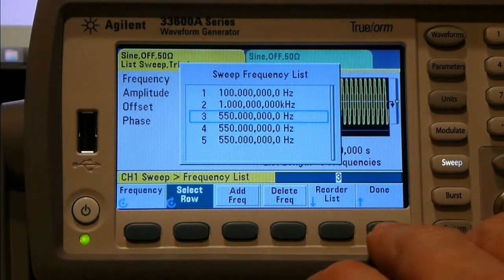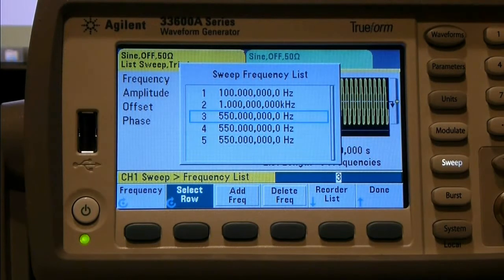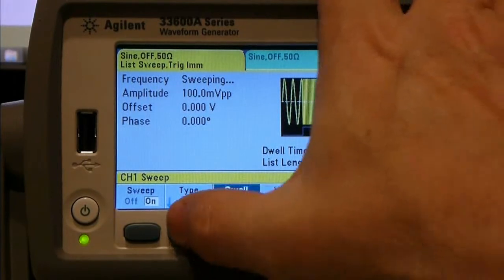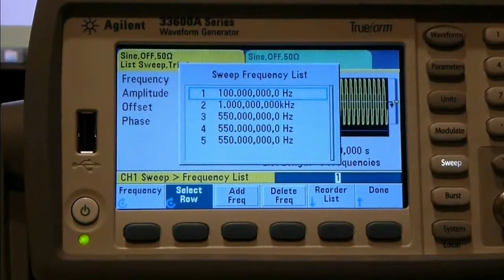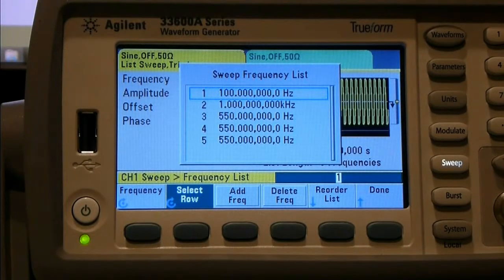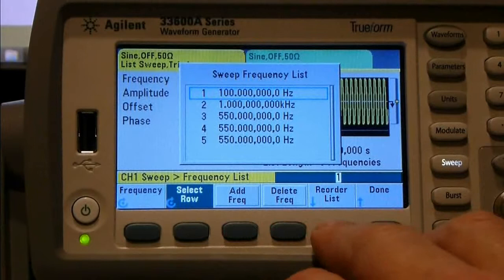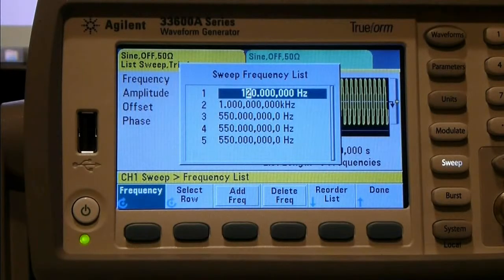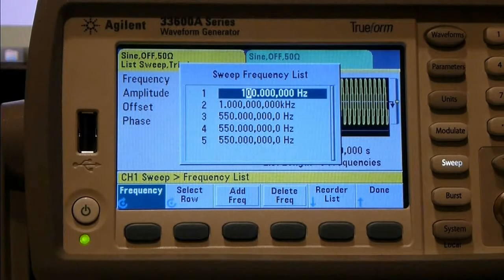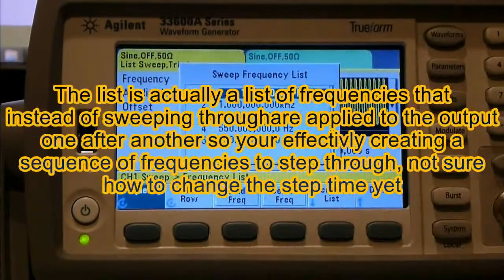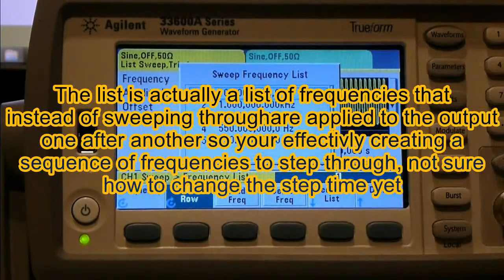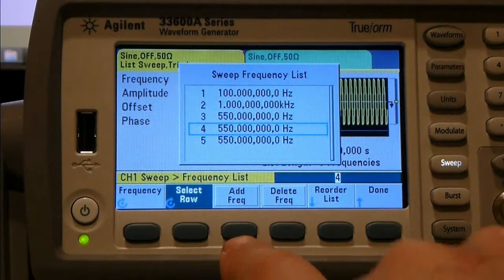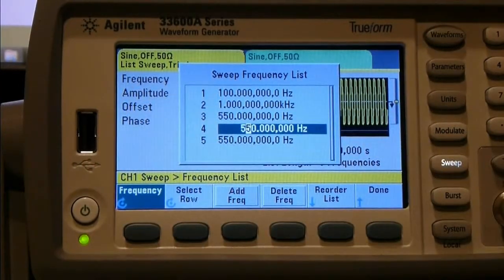Add frequency, delete frequency, reorder list. Frequency. There we go. So we can edit the frequency that this particular item is modulating. Select row. So that was 100, 550. Let's just say we maybe do that one. Change its frequency.